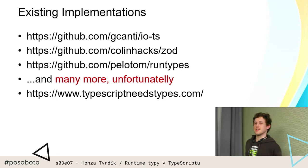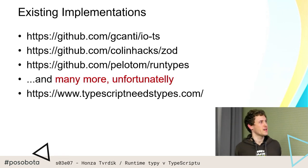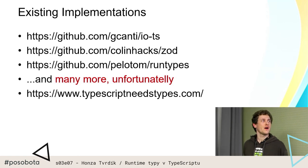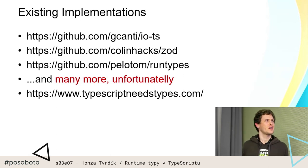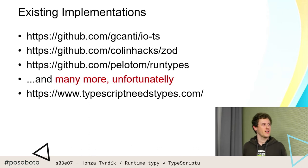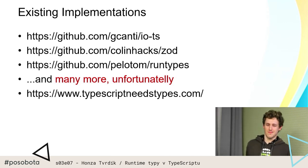Ukázali jsme si, že to celé implementovat je asi na 30 řádků kódu. Nicméně lidi jsou líní na 30 řádků kódu, takže NPM má samozřejmě pro vás řešení. IO-TS je jedna z nejznámějších implementací tohoto patternu, je to funkcionální — pokud máte rádi funkcionální programování, to je pro vás. Pro ty nefunkcionální lidi je spíš něco jako Zod nebo Runtypes, a bohužel mnoho a mnoho dalších.